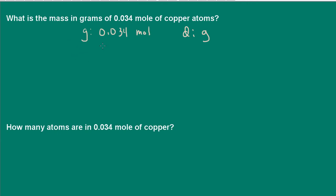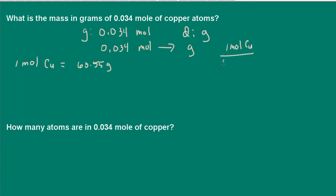Let me write out the road map. We have 0.034 moles and we need to go to grams. We have one arrow here, so we need one conversion factor — we have to relate moles to grams. From the periodic table we know that one mole of copper is equivalent to 63.55 grams. So now I can write two conversion factors for this. When doing these problems in the beginning, take the time to write out the road map and all possible conversion factors — it'll make it easier.